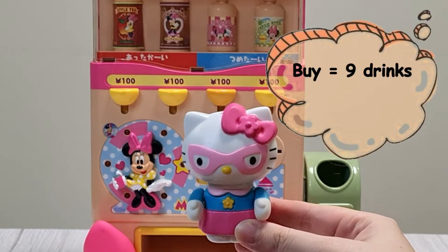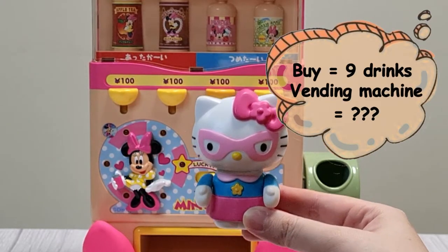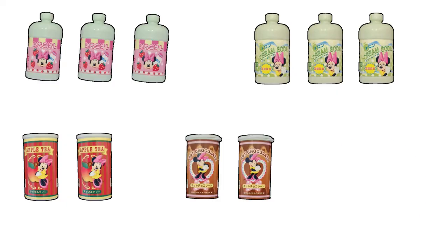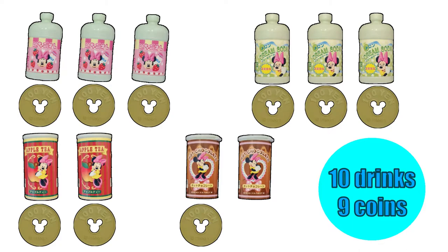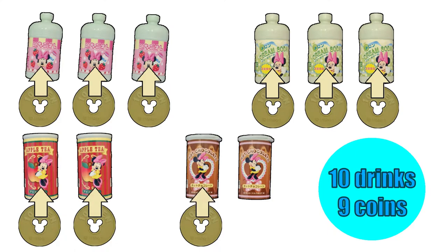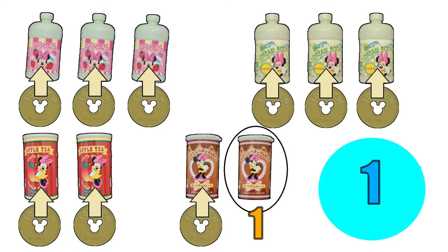If you buy 9 drinks, how many drinks will be left in the vending machine? Hmm, 10 drinks, 9 coins! Let me see! 1, 2, 3, 4, 5, 6, 7, 8, 9! 10 minus 9 equals 1! There would be one drink left if I used all my coins!